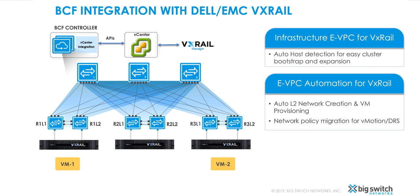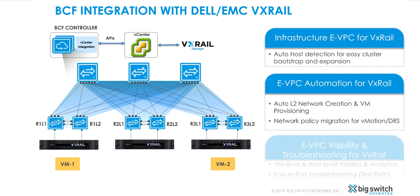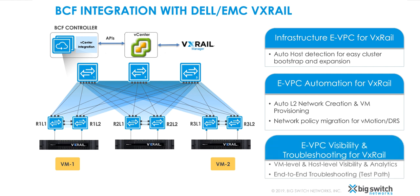Network policy migration automatically provisions or prunes VLANs from the Big Cloud Fabric interfaces as VMs vMotion to different hosts. Big Cloud Fabric also provides real-time visibility and analytics for the VxRail hosts and workload VMs, along with end-to-end troubleshooting capabilities using the Big Cloud Fabric test path.